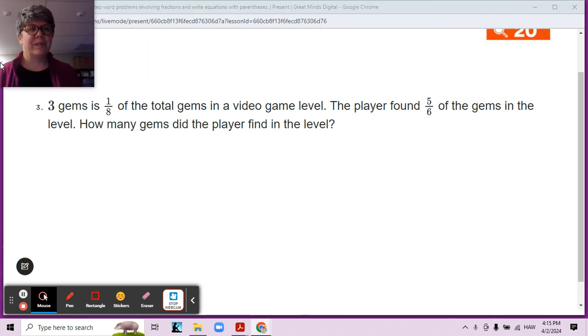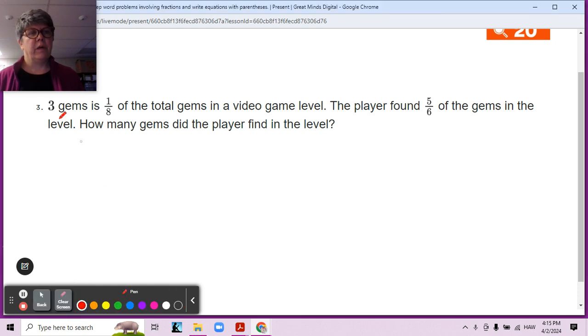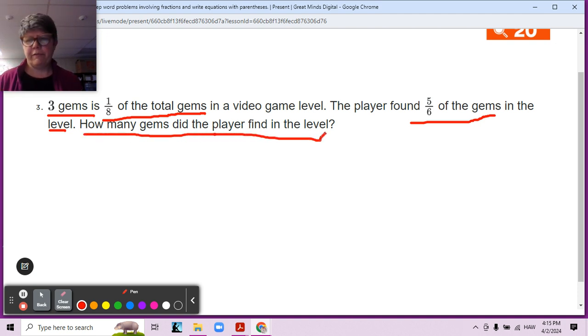Okay, so three gems is one-eighth of the total gems in a video game level. All right, so three gems is one-eighth of the total gems. A player found five-sixths of the gems in the level. How many gems did the player find in the level? So how many gems did they find?